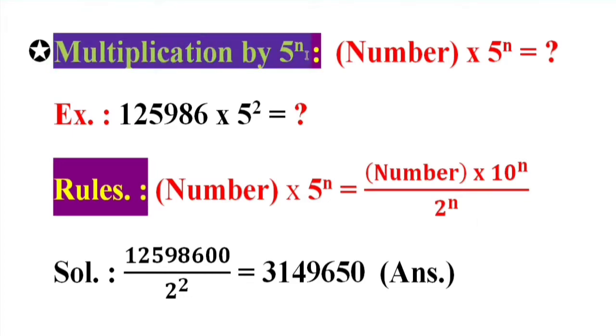Multiplication by 5 power n. Number into 5 power n equal what? Example: 125986 into 5 square equal what? Rules: Number into 5 power n equal number into 10 power n by 2 power n.